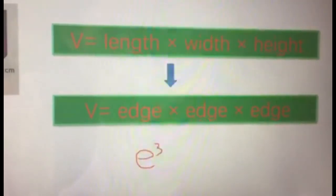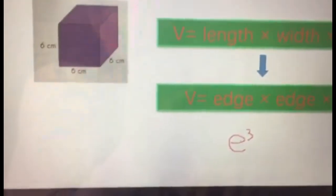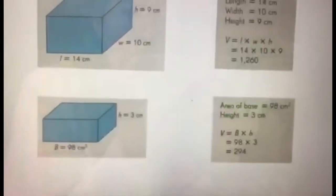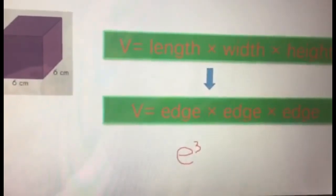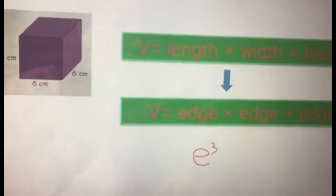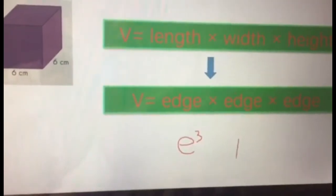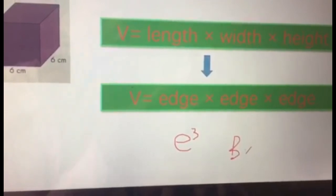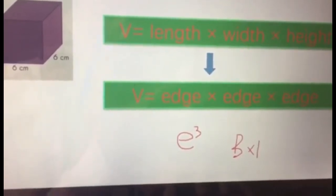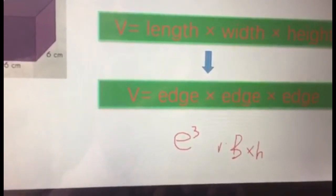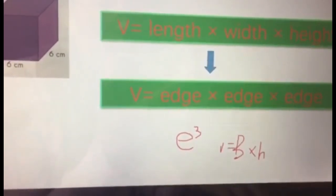If you are given the base instead of edge and edge, you can write b times h, V equals b times h, base times height. V equals b times h.